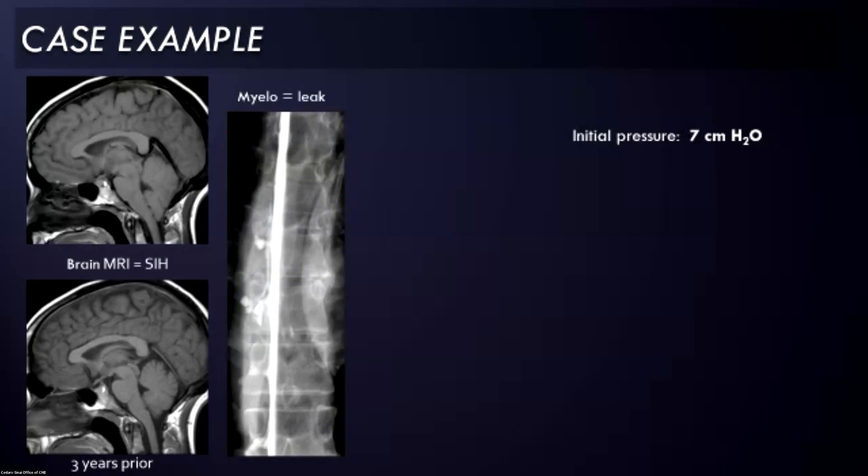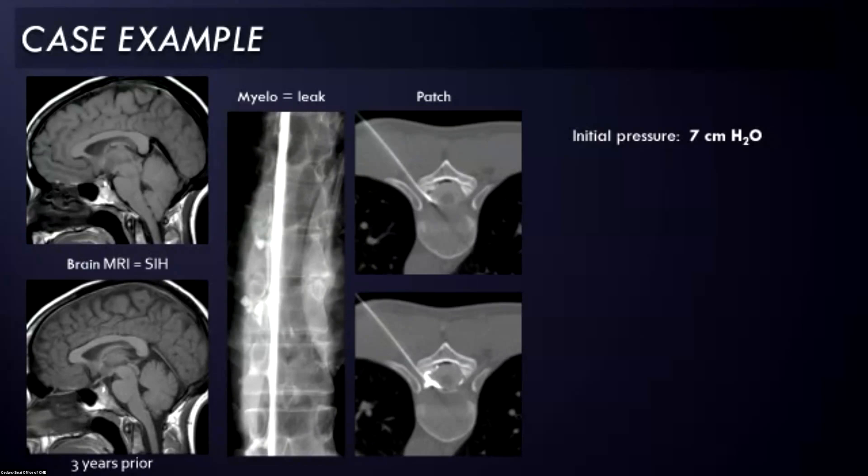This was her myelogram, and you can see she has a lateral dural tear with the leak into the epidural space. At that time, her initial CSF opening pressure was seven centimeters of water. I patched her at the spot where the leak occurred, and then she did okay. She went home.